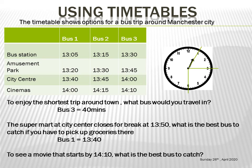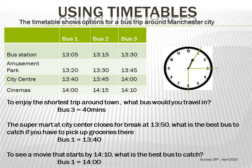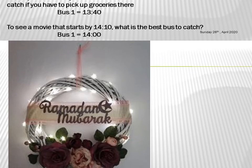The third question: you want to see a movie that starts at 14:10. Which bus will you catch? We check the cinemas column — the end point. The movie starts at 14:10, meaning you need to be seated by then. Bus 3 arrives exactly at 14:10, so you'd just be arriving. Bus 2 arrives at 14:15, which is too late. The best option is Bus 1, which arrives at 14:00, giving you about 10 minutes to settle in.